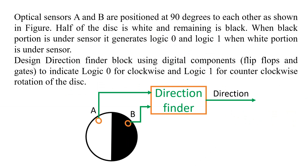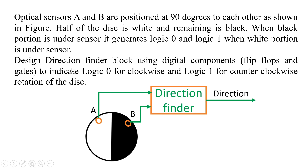Friends, the question of the session is on your screen. There are two optical sensors A and B which are positioned at 90 degrees to each other, as shown in the figure. Half of the disk is white and the remaining half is black. When the black portion is under a sensor, that sensor will generate logic 0; whenever the white portion comes under the sensor, it will generate logic high. The behavior of both sensors is the same.